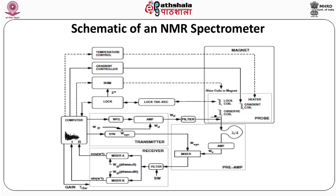On the top right corner you see a magnet in which a probe is inserted. At the bottom of the probe you see a box labeled as pre-amplifier, and then you have other boxes labeled as transmitter and receiver. The console has the electronics that generates the pulse of required radio frequency. The sample is inserted into the probe and the radio frequency pulse is applied. The signal generated by the sample is observed by the observe coil and is immediately pre-amplified, with the pre-amplifier being very close to the probe. That signal is then reduced and goes to a mixer and then through other circuits before it is digitized and stored in memory.